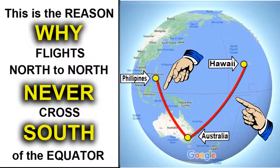You will never see a flight, for example, from the Philippines going to Hawaii with a stopover south of the equator — anywhere like New Guinea or anywhere north of Australia. You will never see any flights going south of the equator and then going back north, crossing the equator two times.